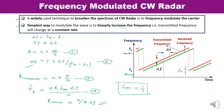FMCW systems are used as radar altimeters, which is a very important application. When talking about a continuous wave system, the duty cycle is equal to 1, meaning the peak power equals the average power. In contrast, in a pulse system the peak power is many times greater than the average power. This covers the basics of frequency modulated CW radar.